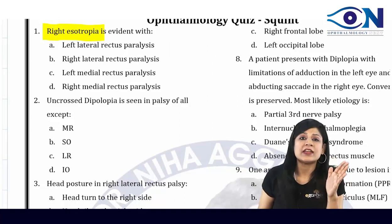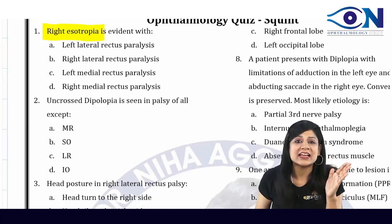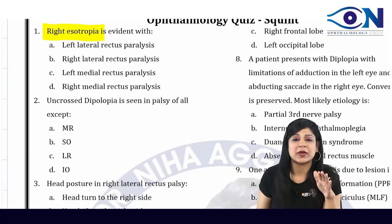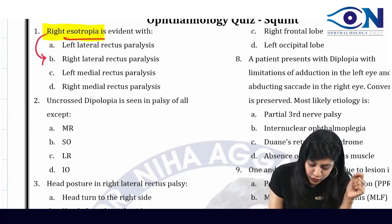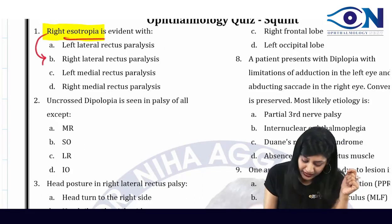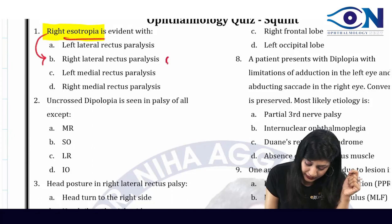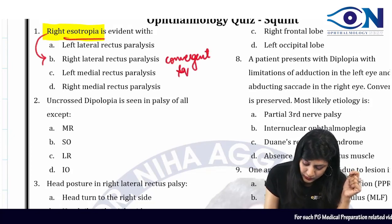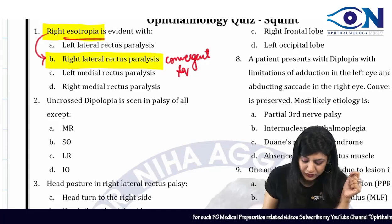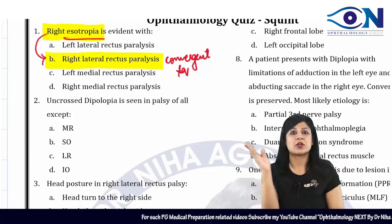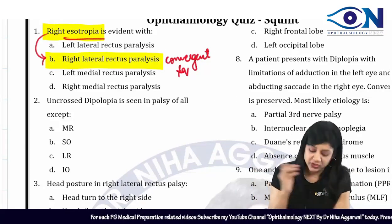So if you are having a right convergent squint, right means the muscle should be of the right side only and 'eso' means it will be a convergent squint. So the answer to this question will be B — right lateral rectus weakness will cause the right convergent squint.